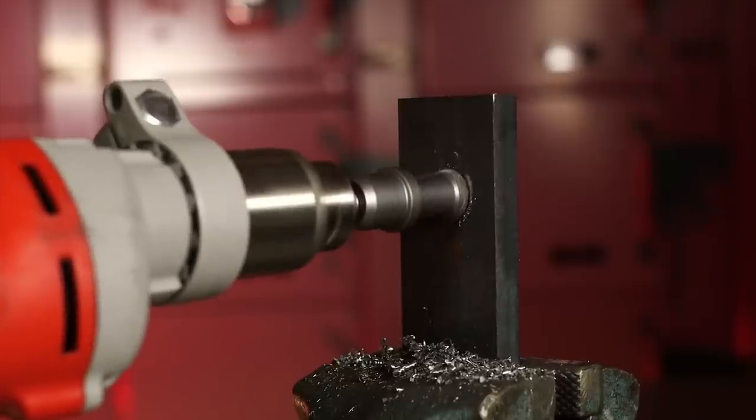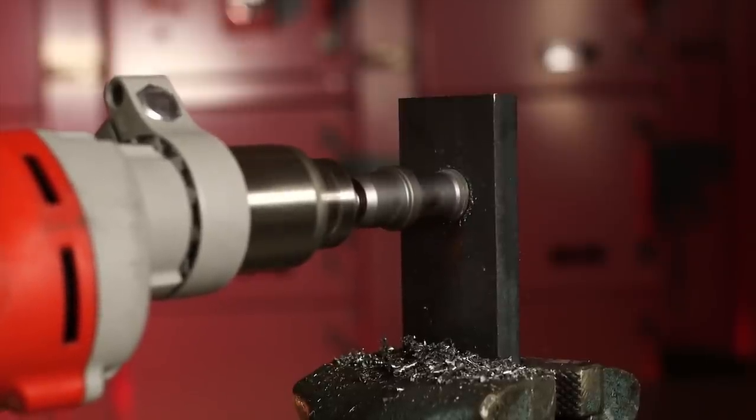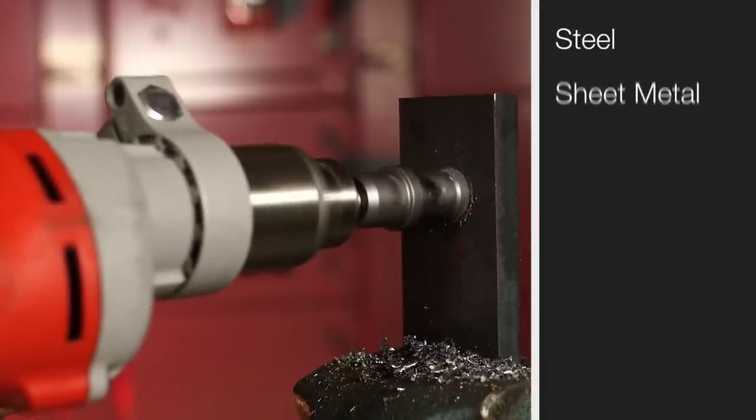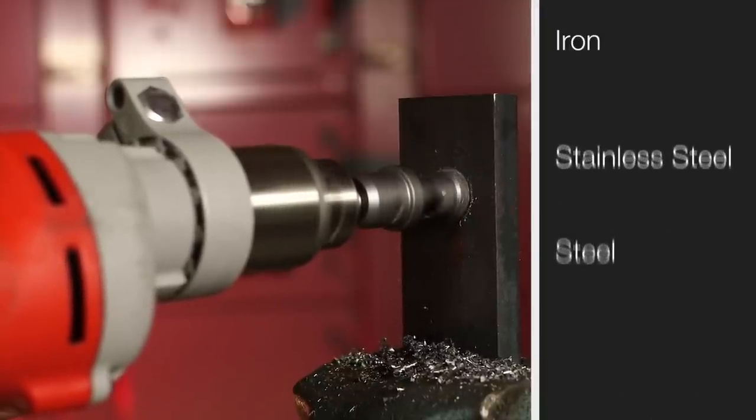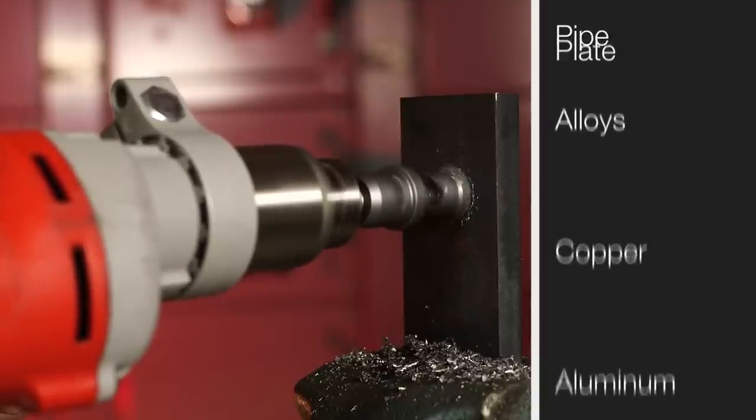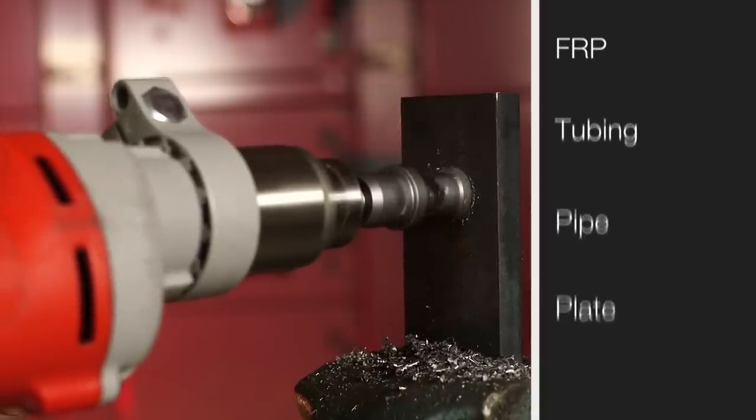But the key to its design is its cutting head. The ultra-hard carbide cutting teeth make quick work of whatever it's cutting, be it sheet metal, steel, stainless steel, iron, cast iron, aluminum, copper, alloys, plate, pipe, tubing, FRP, and plastics.